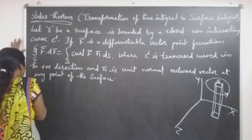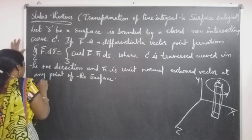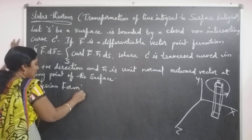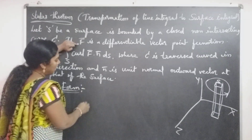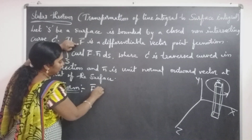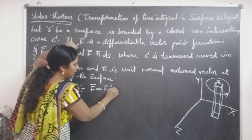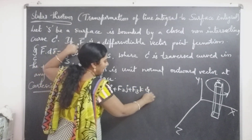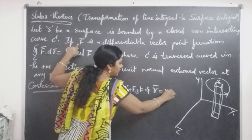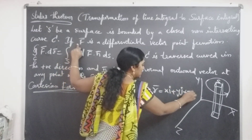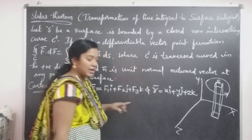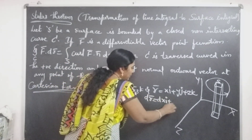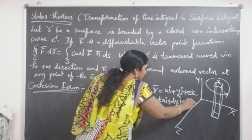The Cartesian form of Stokes theorem: generally F-bar is a vector point function, denoted by F1·i plus F2·j plus F3·k. And R-vector is a position vector, it is x·i plus y·j plus z·k. Then dr-bar equals dx·i plus dy·j plus dz·k.